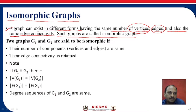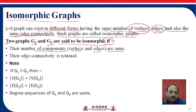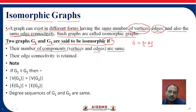Two graphs G1 and G2 are said to be isomorphic if and only if the following condition holds: their number of components — that is, vertices and edges — are the same. This is very important. The graph components are vertices and edges. Always remember G is equal to vertices and edges. That is called a graph. So the graph components — vertices as well as edges — should be the same.